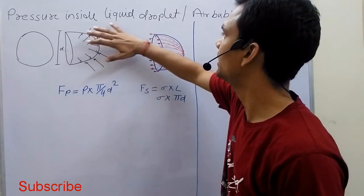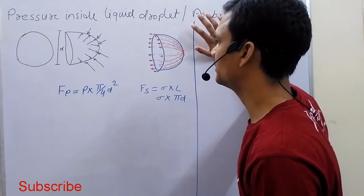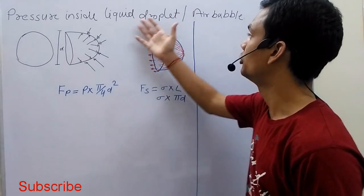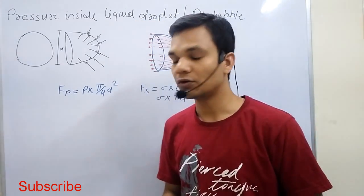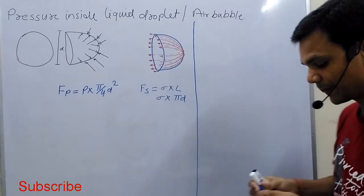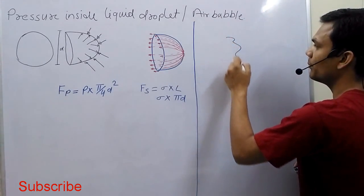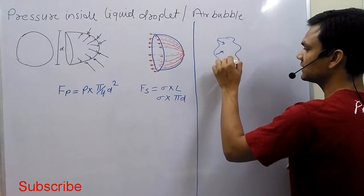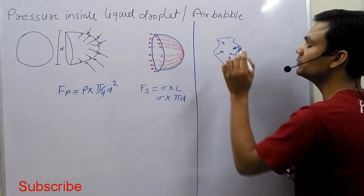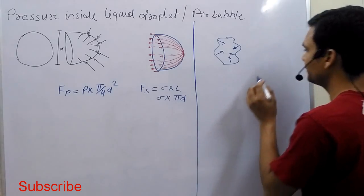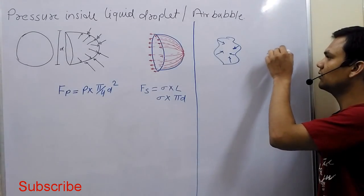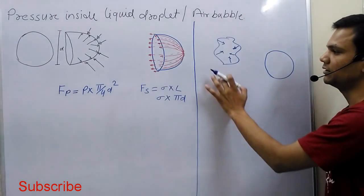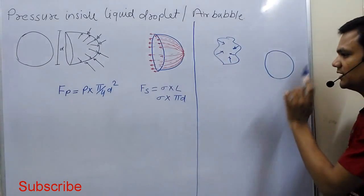Today we discuss research inside liquid droplets or air bubbles. To understand this, first we understand why the liquid droplet, air bubble, or soap bubble are spherical in shape. Because if we drop water in any shape, it tries to acquire minimum cross-sectional area and minimum surface area. Minimum surface area is for a sphere, so the shape converts into spherical shape.